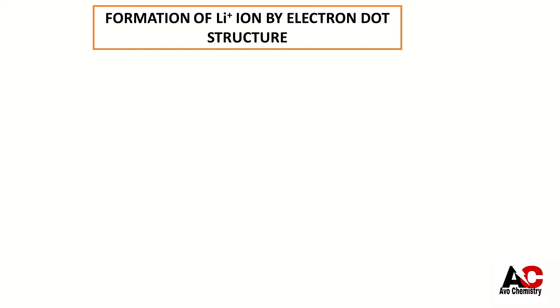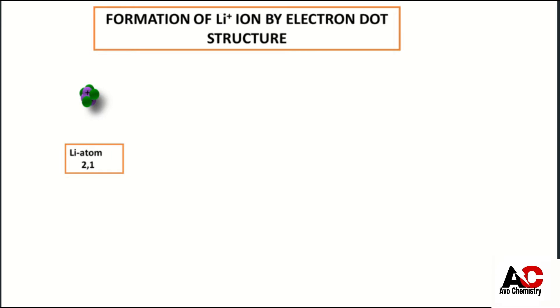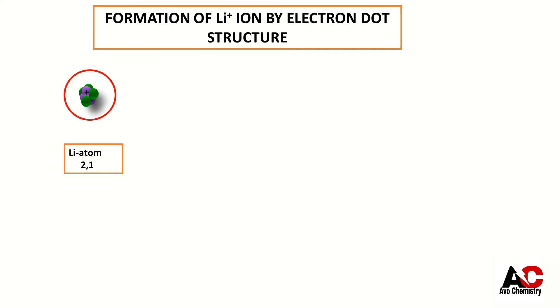Formation of lithium ion by electron dot structure. Lithium atom has three protons and four neutrons inside the nucleus. This is the lithium atom and its electronic arrangement in shells is 2 and 1. That shows in first shell it has two electrons and one electron is present in the valence shell.